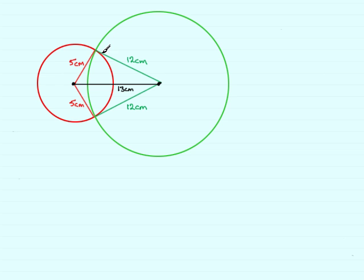I've just started to draw this question out. We've got two circles, one of five centimeters radius and another circle of radius 12 centimeters, and the distance between the centers is 13 centimeters. Now to find the overlap here, the area of the overlap, what I'm going to do is consider drawing a line straight down from where they intersect, like that.